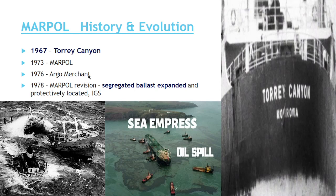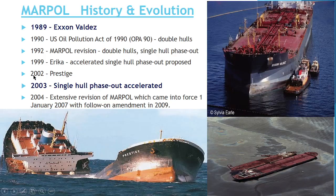While MARPOL 1973 was yet to be adopted, a ship named Argo Merchant again caused an oil spill, which led to the rapid revision of MARPOL 73 and addition of segregated ballast tanks, dedicated clean ballast tanks, and protective location requirements. MARPOL was then adopted in 1978 with certain exemptions. Annex 1 and Annex 2 entered into force in 1983, and Annex 5 was also adopted at that time.